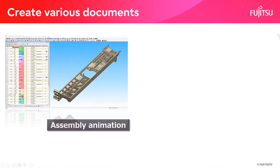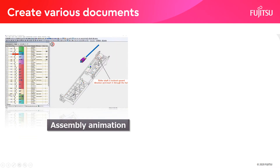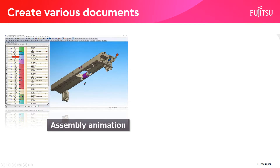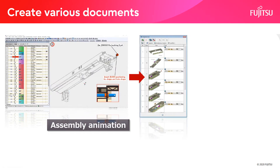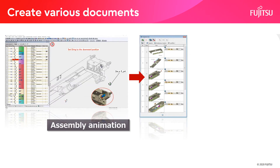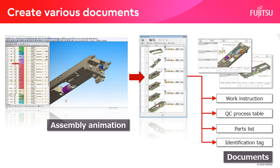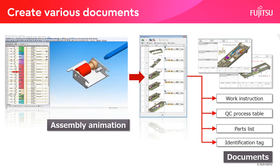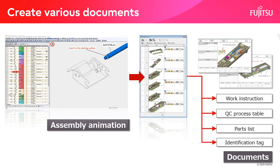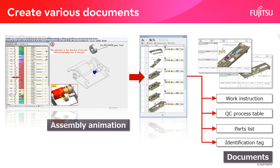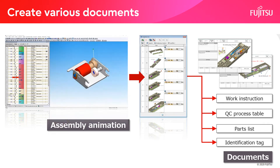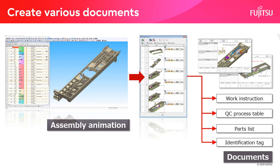From the created assembly animation, still images are extracted and output together with operation information to create various manufacturing documents at once. Even if there is a change in the product shape or assembly procedure, the changed part can be immediately reflected in the document, so the time for document creation and correction can be greatly reduced.